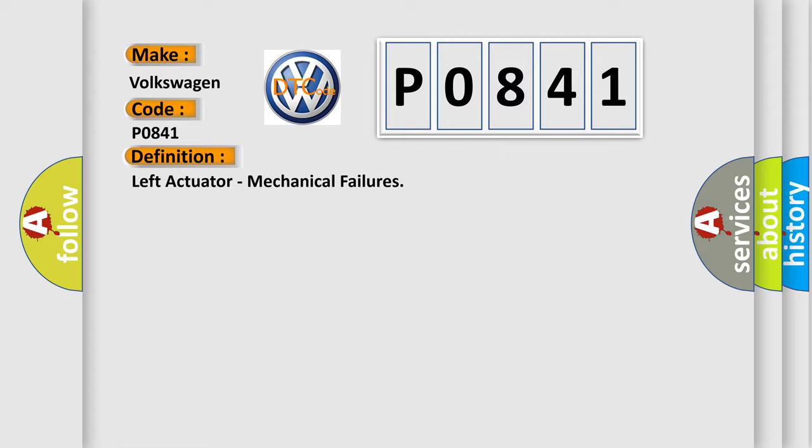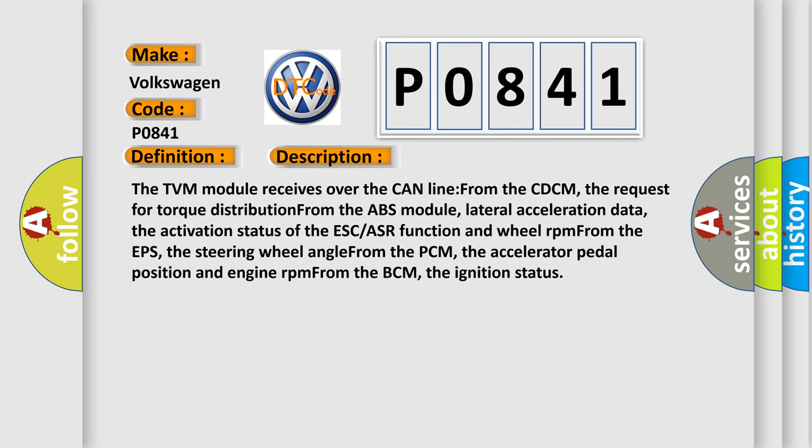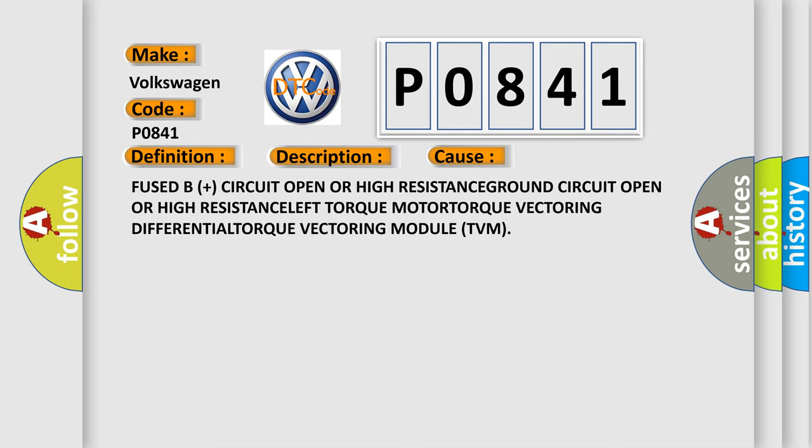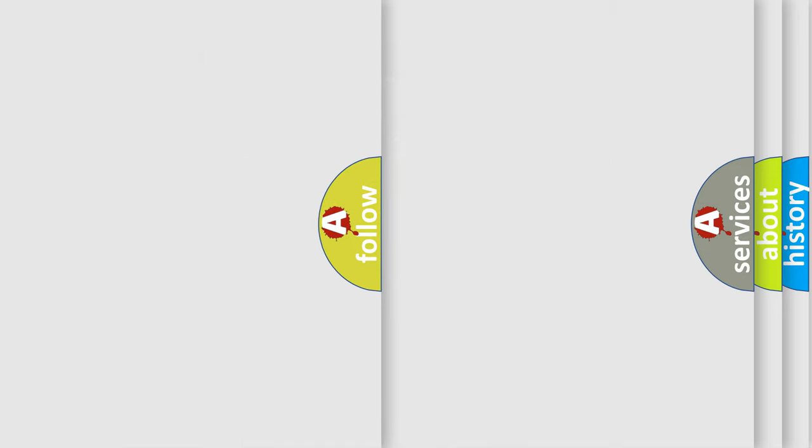Here is a short description of this DTC code. The TVM module receives over the CAN line from the CDCM the request for torque distribution from the ABS module, lateral acceleration data, the activation status of the ESC/ASR function, and wheel RPM from the EPS, the steering wheel angle from the PCM, the accelerator pedal position and engine RPM, and the ignition status from the BCM. This diagnostic error occurs most often in these cases: fused B+ circuit open or high resistance, ground circuit open or high resistance, left torque motor failure, or a Torque Vectoring Module (TVM) fault.